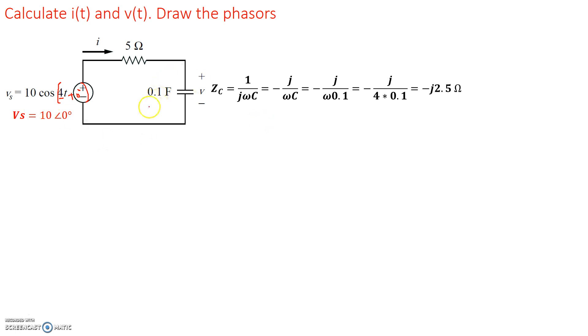So the impedance of this capacitor, impedance is -j2.5 ohms. And in this circuit, we have a resistor and this capacitor or this impedance in series. So we have a 5 ohm resistor and a -j2.5 ohm impedance in series. So they add up and we get a total impedance of 5 - j2.5 ohms.